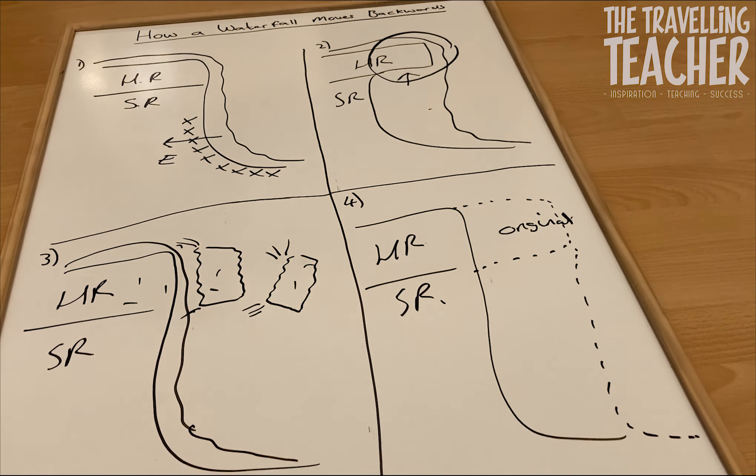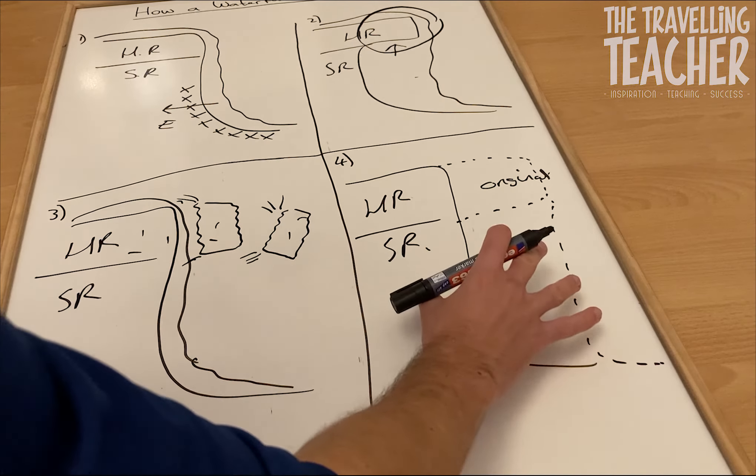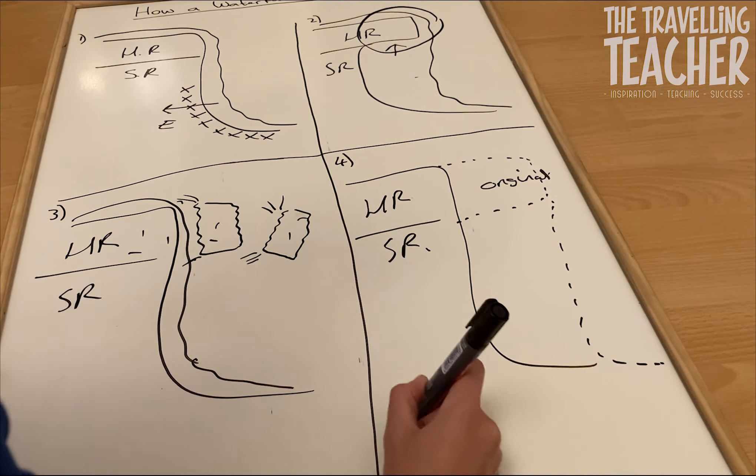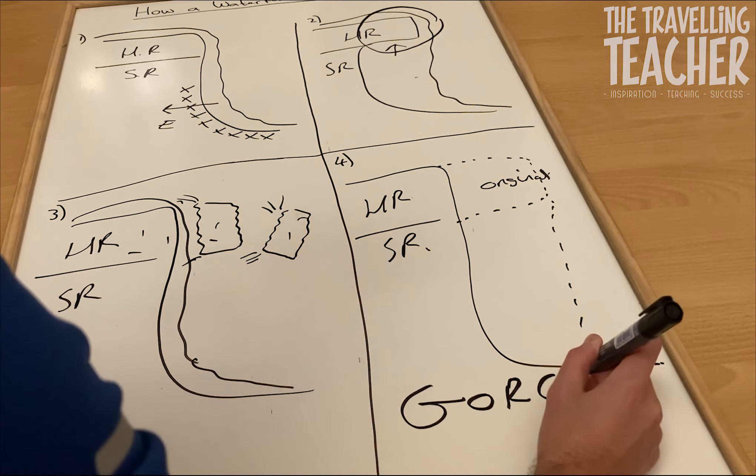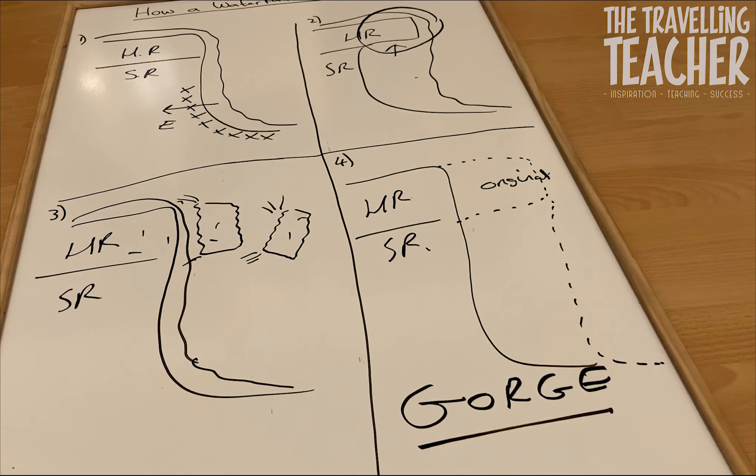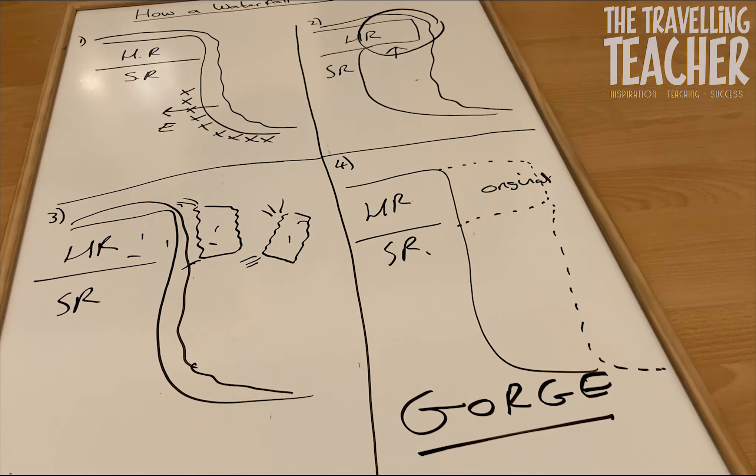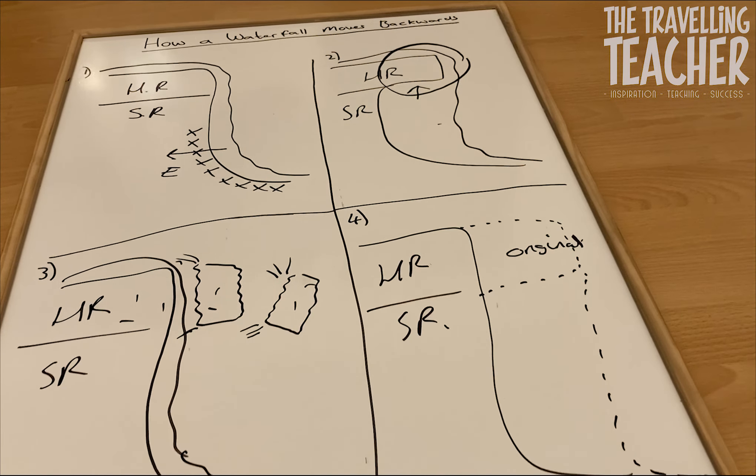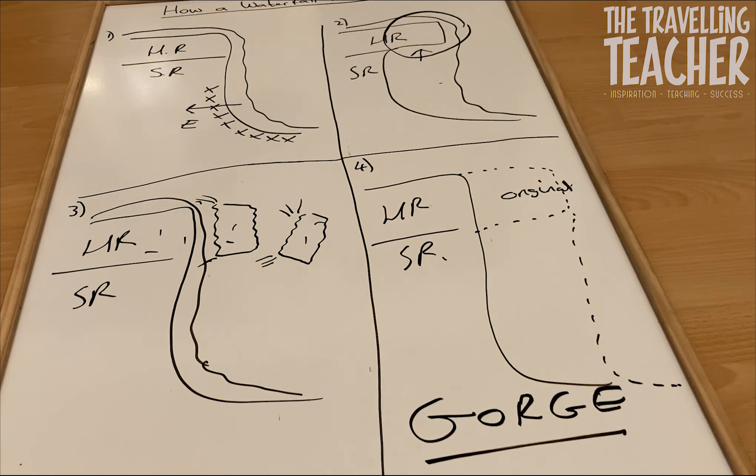And of course, once this happens, stage four happens and it keeps eroding backwards. That's when we get a feature called a steep sided gorge. And obviously we find this in the upper stages of a river valley. So there you have it, how a waterfall erodes backwards to form a steep sided gorge.